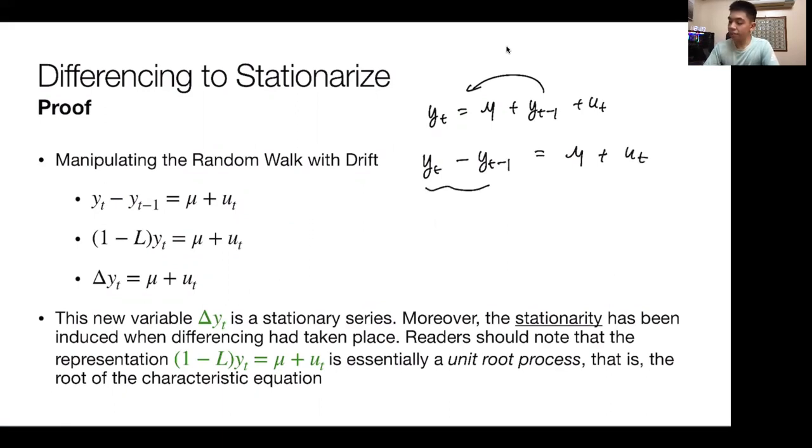I can write this in lag operator notation, which is just, if I lag it once, that's just L. So 1 minus L times yt, because I didn't lag this term, this term here is lagged. And that's equal to the drift parameter plus ut. Then effectively, this thing as well is equal to the change in yt, and that's equal to mu plus ut. And what you'll notice is that you remove that phi coefficient. This new variable is in effect a stationary series, because it's just the drift plus some white noise error term.